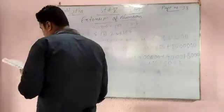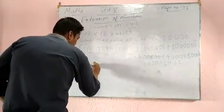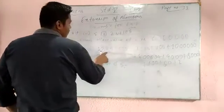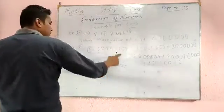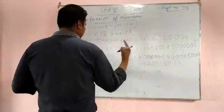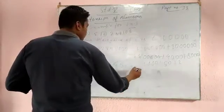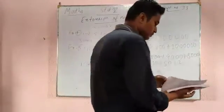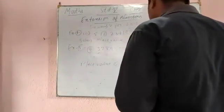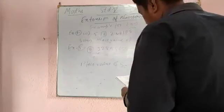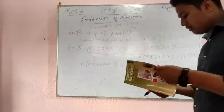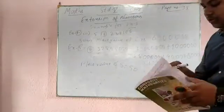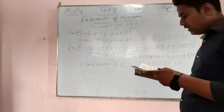One more part of the question is to find the place value of 5. For 5, write 5 and after 5 there is 1 number, so put 1 zero. The place value of 5 is 50. So with the help of examples 3, 4, and 5, you will solve exercise 3.